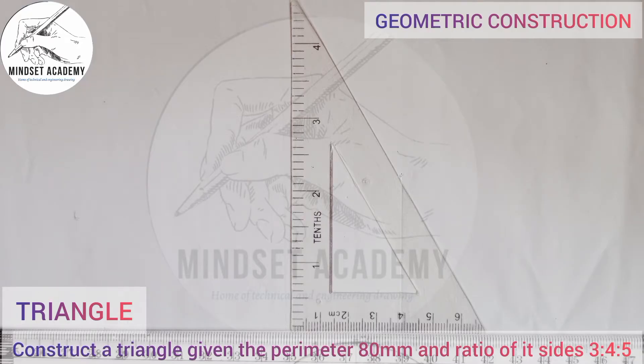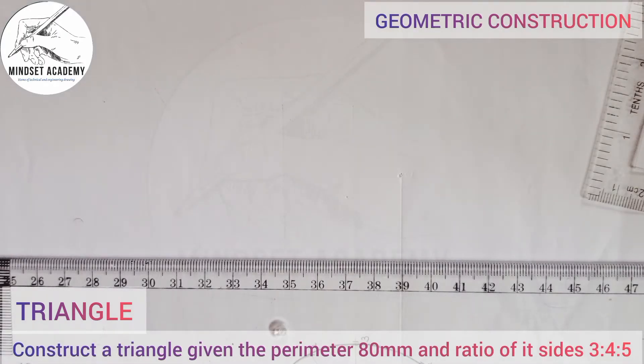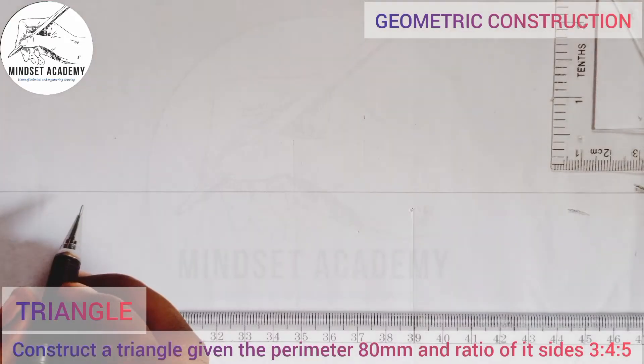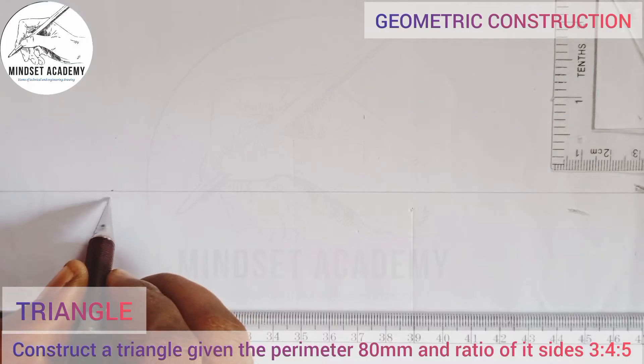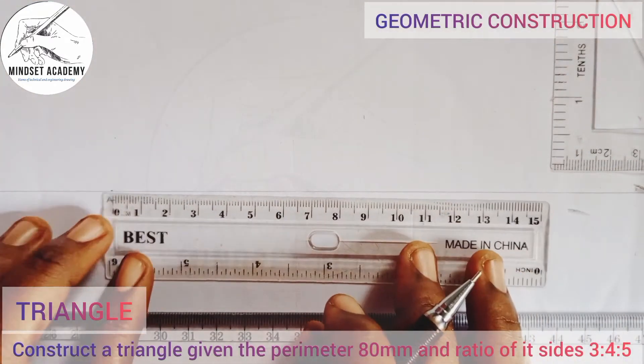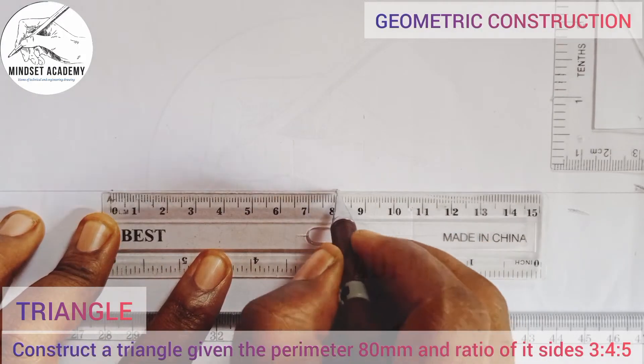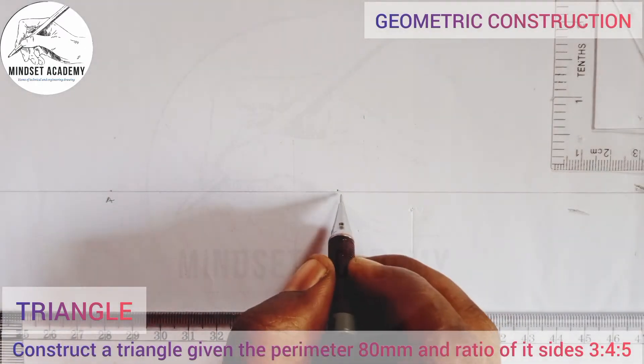First, draw your horizontal line this way. Pick a point on the line, let's say point A. The perimeter is 80, so you measure 80 on that line. From 0 to 8 is 80 millimeters. This will be your point B.